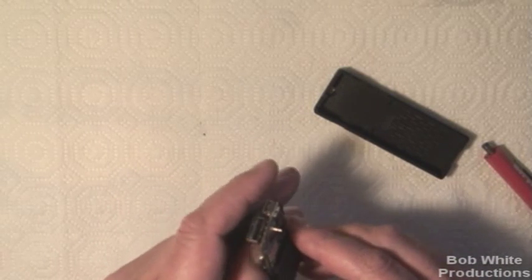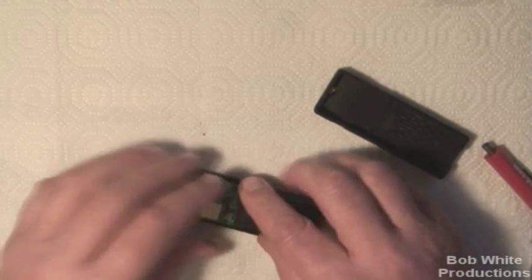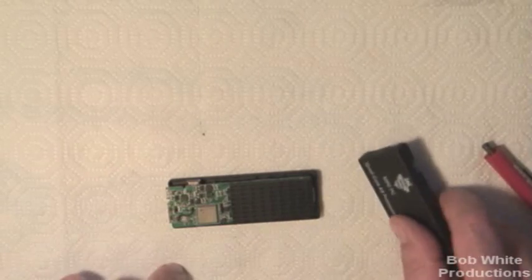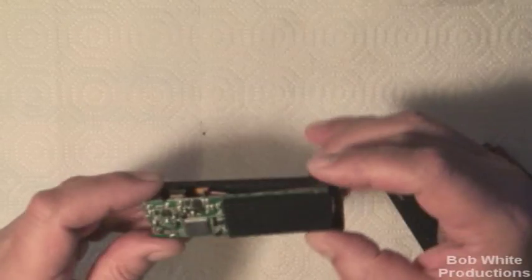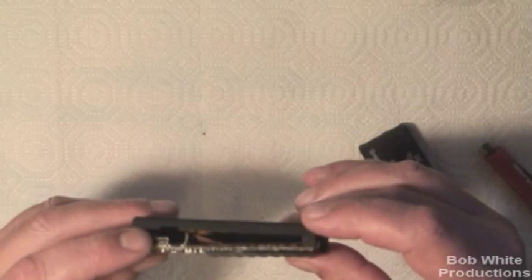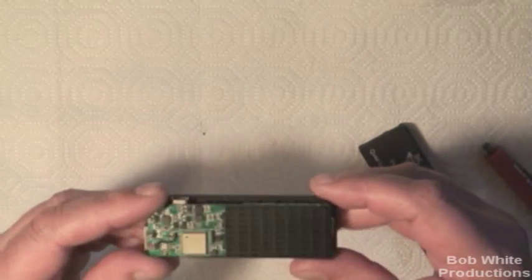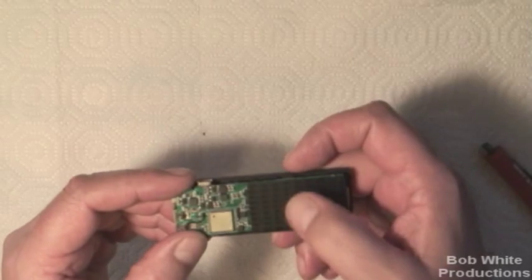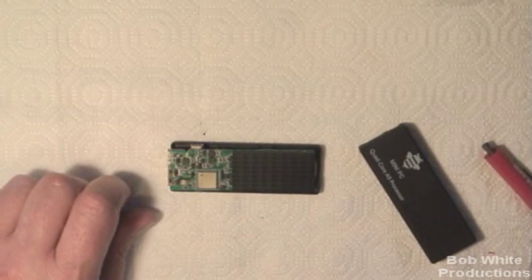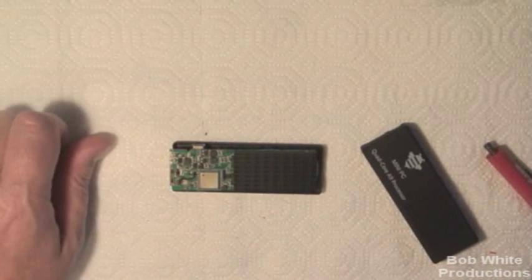I'm going to put mine back together here as best I can without messing it up. And that is the MK908. Again, I'm not going to pry my heat sinks off just to show you the components under the board, but I can guarantee the processor is sitting right here. So that's the MK908. Next we'll look at the QX-1.